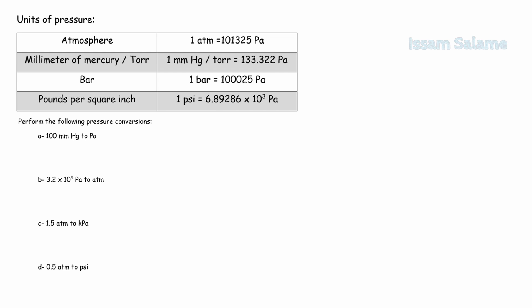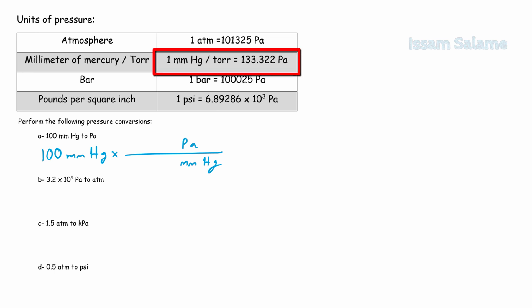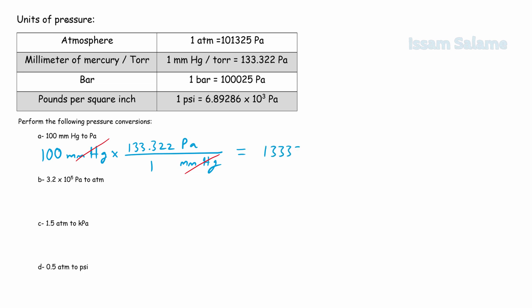Exercise A: convert 100 millimeters of mercury to Pascal. Using the relationship 1 mmHg = 133.322 Pa, we start with 100 mmHg and multiply by the conversion fraction — mmHg in the denominator, Pascal in the numerator — with 1 next to mmHg and 133.322 next to Pascal. Cancelling units, the answer is 13,332.2 Pascal.